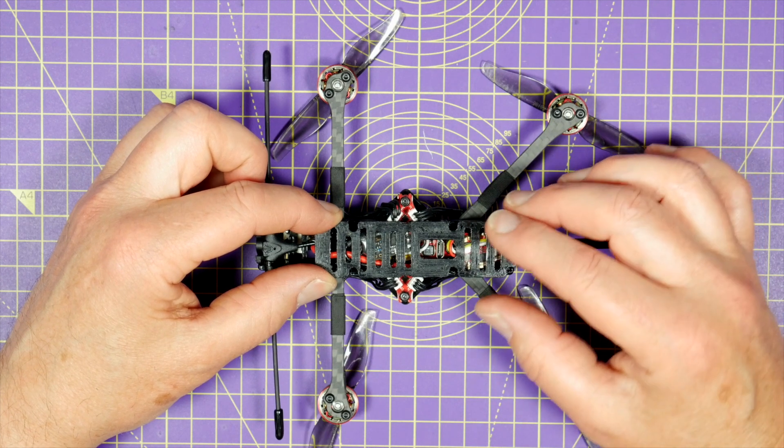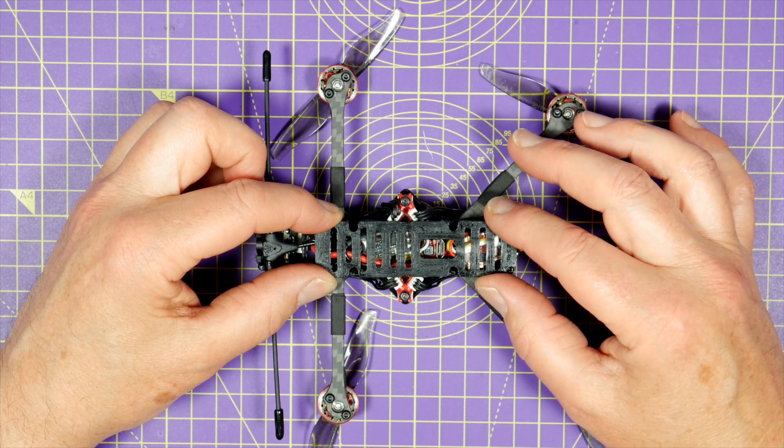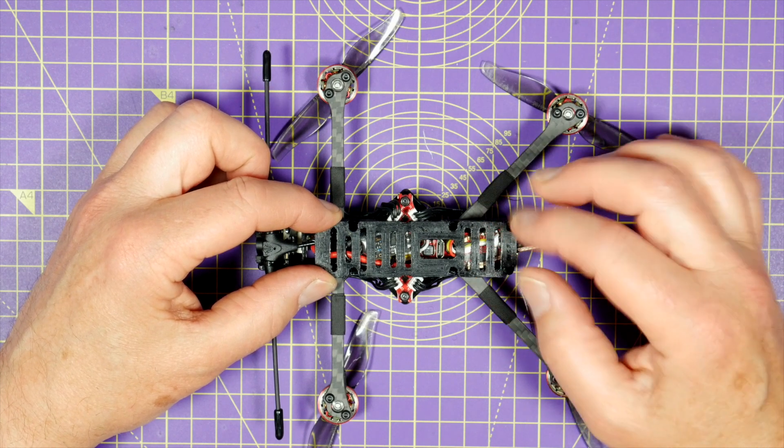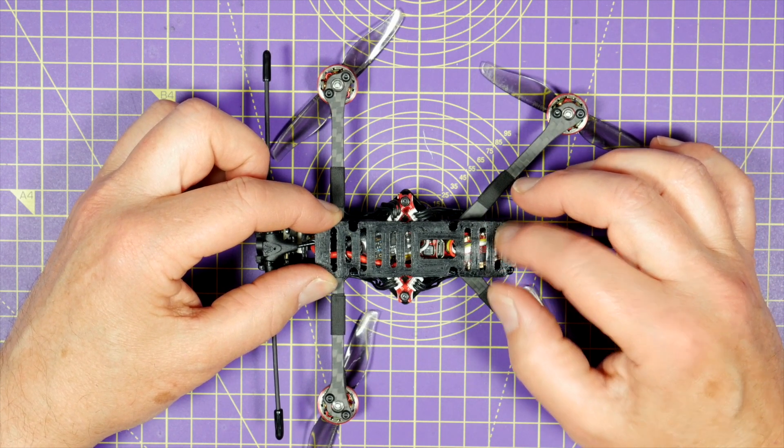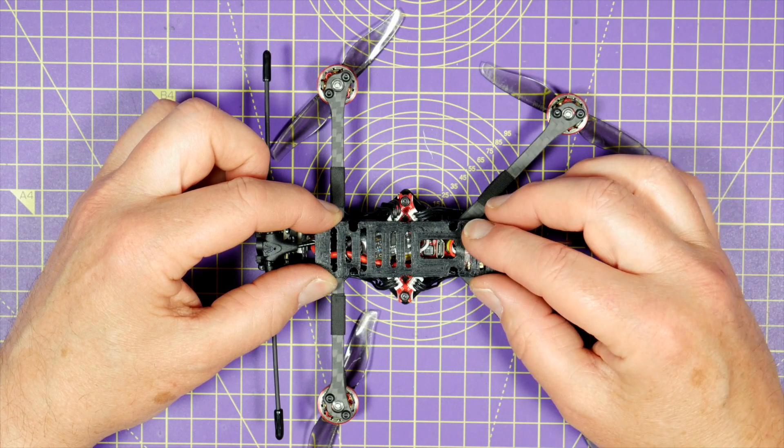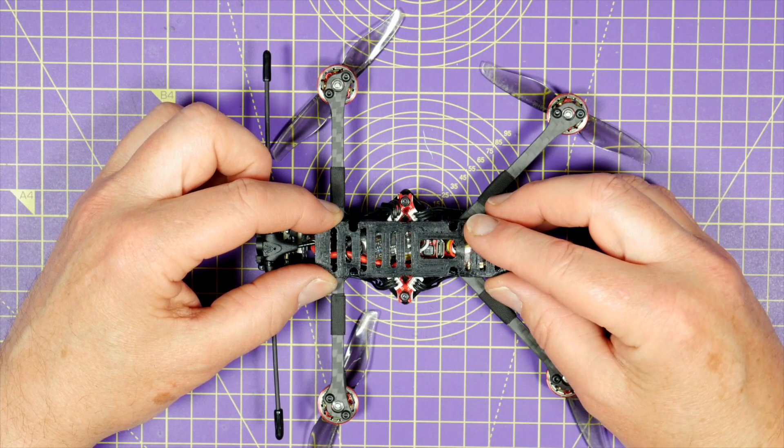But Rackon do have a download link on their website to the STL file, so you can print your own if you want. Maybe nylon might be a better material, but it's heavier than PLA or PETG.